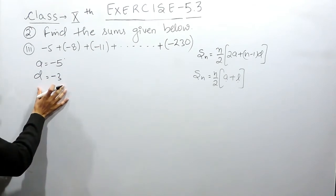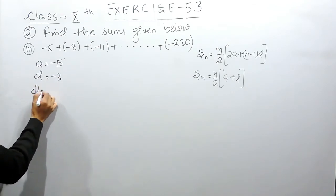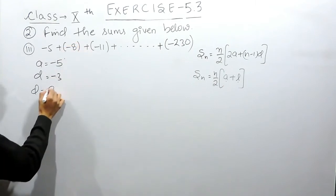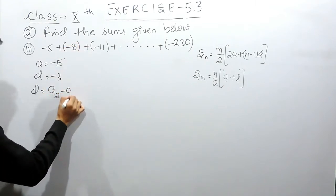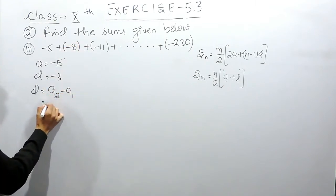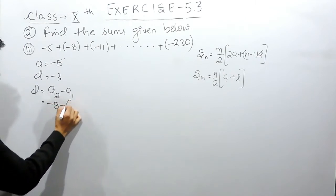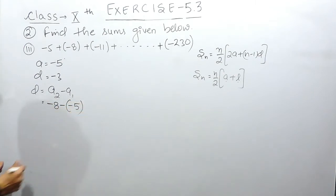If you are not able to find this out directly, what you can do is subtract the first term from the second term. So the second term is -8 minus the first term which is -5.